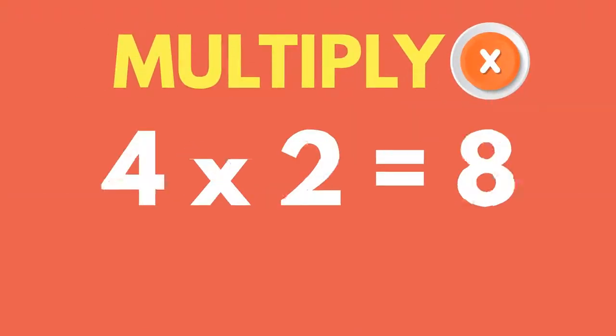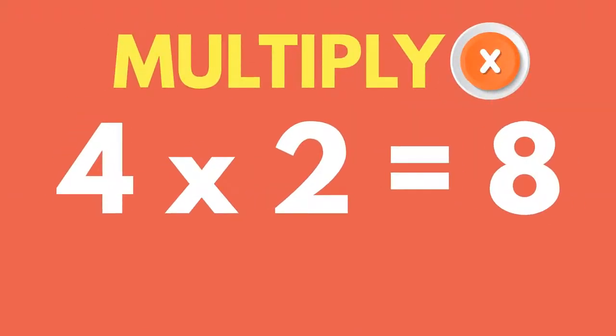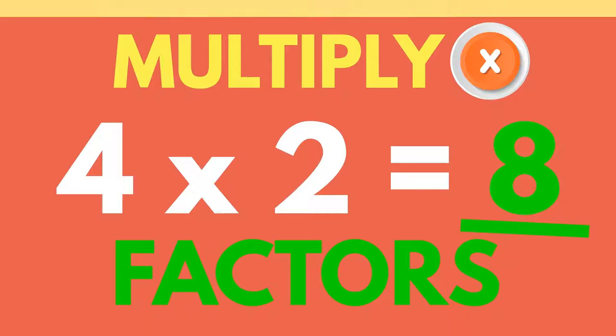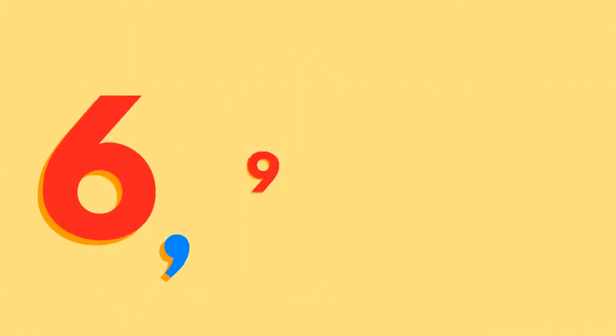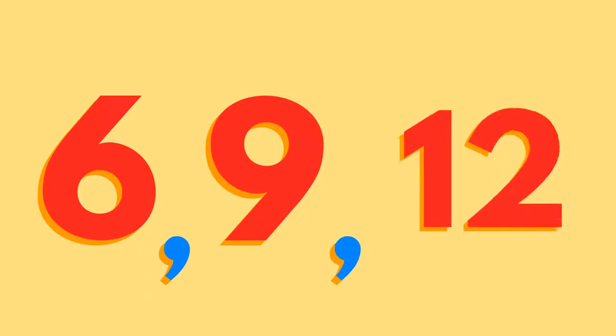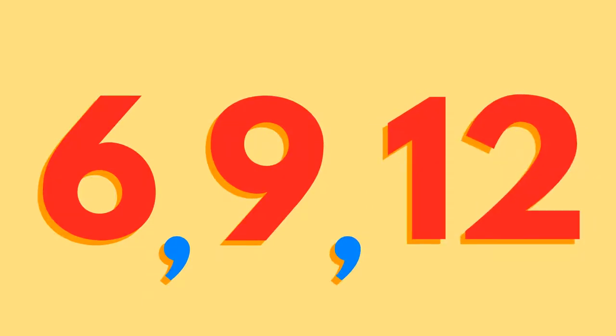When we multiply numbers together to get another number, they are said to be factors of that number. All numbers are factors of larger numbers. 3 is a factor of 6, 9, 12 and so on.